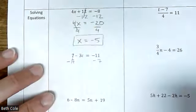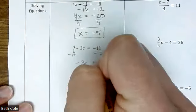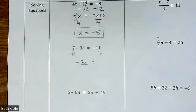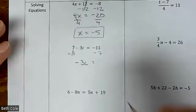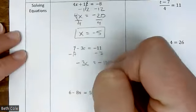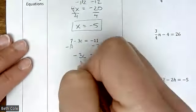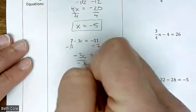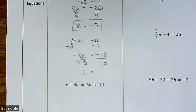Minus 7, minus 7. Be really careful here — it's not 3c, it is negative 3c. The most commonly missed thing, always, is negative signs — all the way up through calculus it's just always negative signs. You've got to be careful. Negative 11 and negative 7 will be negative 18, and then you'll divide by negative 3. Negatives cancel, and what would you get?